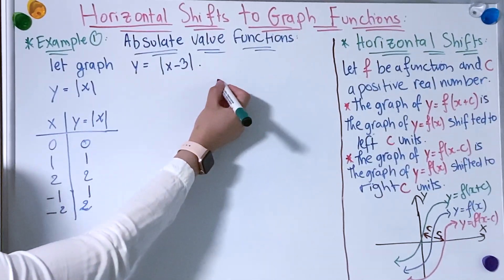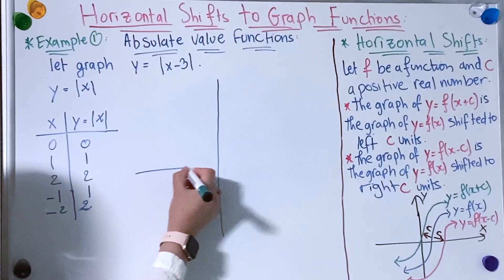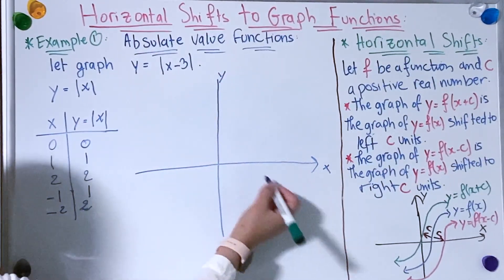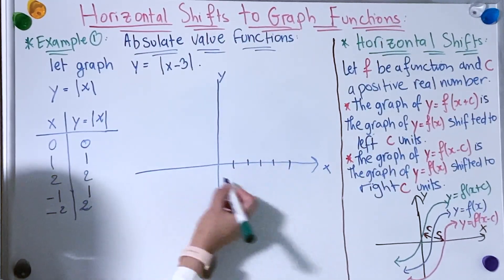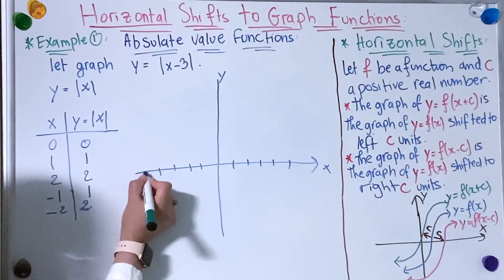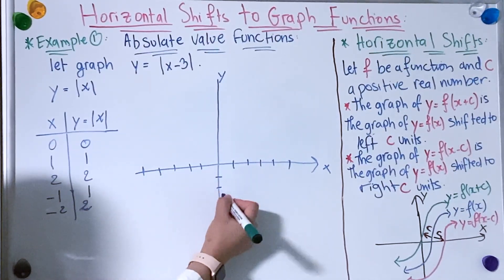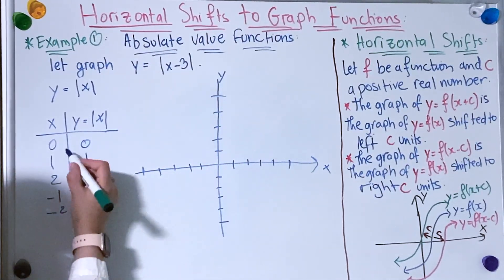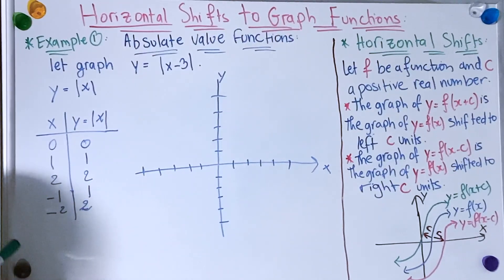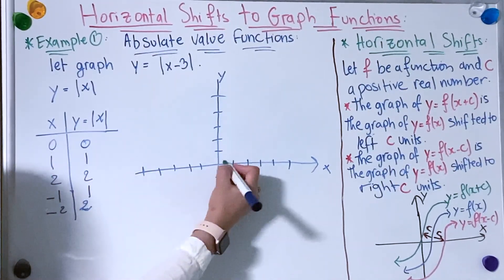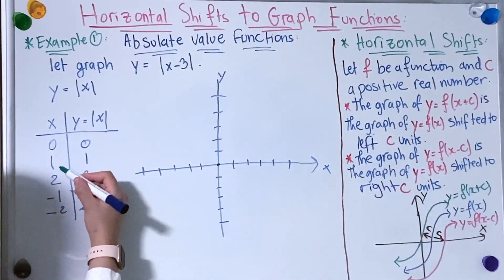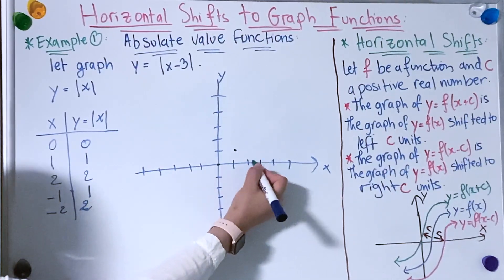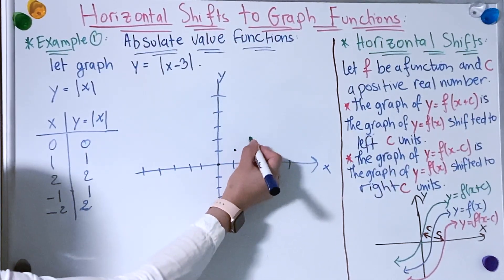So now I'm going to graph the points I found. The first point: x = 0 and y = 0. The second: x = 1 and y = 1. The third: x = 2 and y = 2.